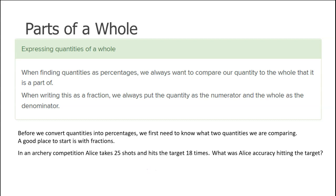Here is an example of what we'd like to do. We need to know what two quantities we are looking at — the one that we're interested in, showing that as a percentage of, and the total amount. This example says: in an archery competition, Alice takes 25 shots and hits the target 18 times. What was Alice's accuracy hitting the target? So we're looking for what percentage of times, out of the total shots she had, did she hit the target — her accuracy.